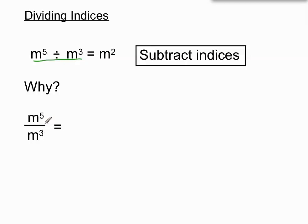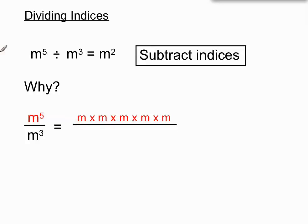Like any division we could write it with m to the 5 over m to the 3. The thing that's dividing is on the bottom if we write it in fraction form like that. And so as we write it out in expanded form, m to the 5 means m times m times m times m times m — 5 m's all multiplying with each other on the top, and on the bottom m to the 3 is m times m times m. So what we can do here is do the traditional cancelling down.